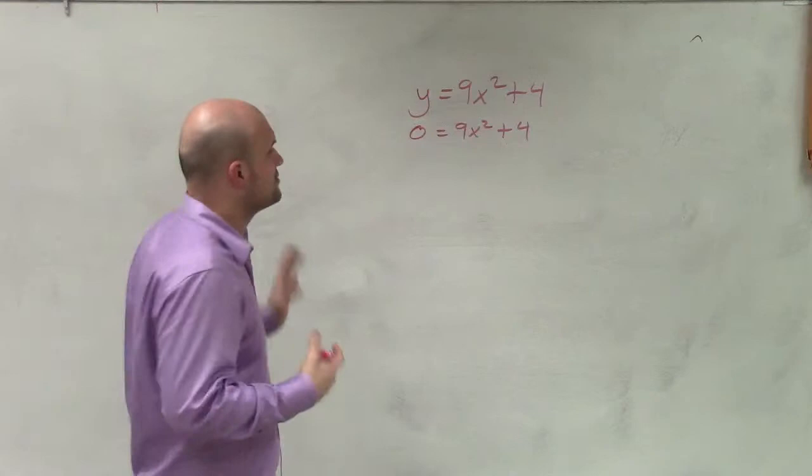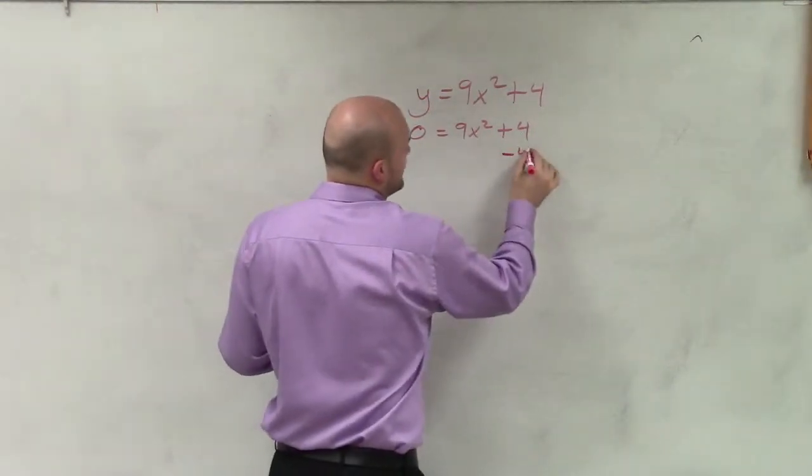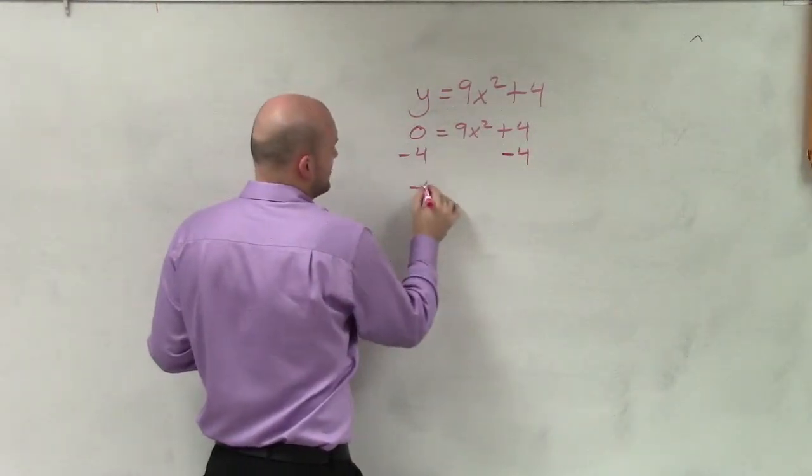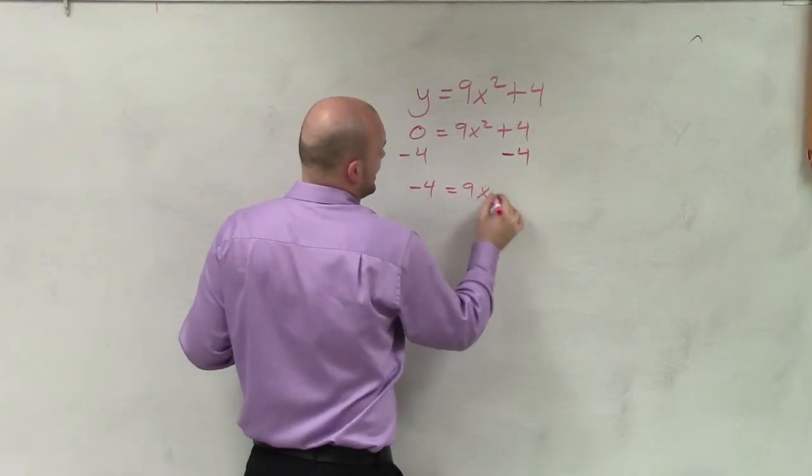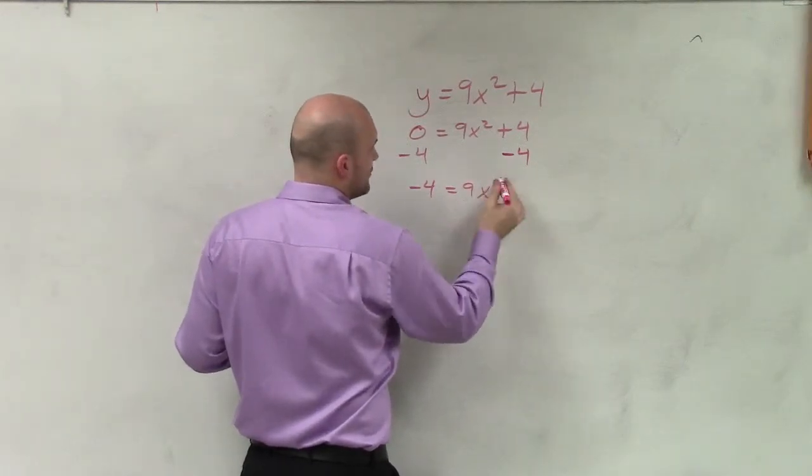By applying the square root method, I'm going to isolate my variable using inverse operations. So I'll subtract 4. So I have negative 4 equals 9x squared. That's an x, I don't know where an 'a' came from.